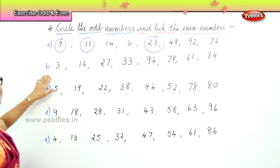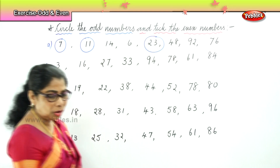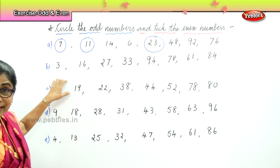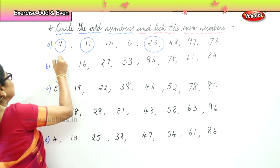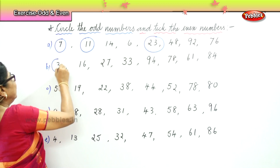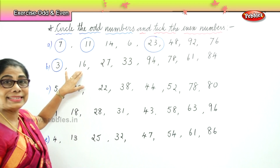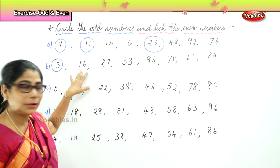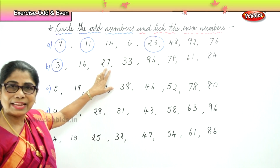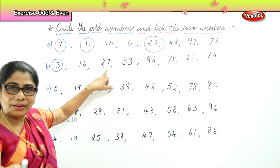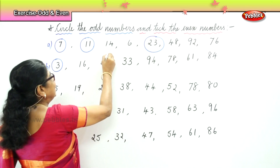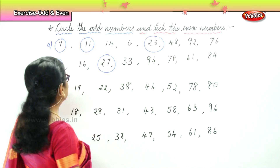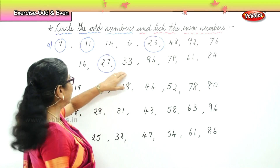Let's take the second set. Number three — is it an odd number? Yes, three is an odd number. Sixteen — is it an odd number? No. Twenty-seven ends in seven — is twenty-seven an odd number? Yes. Seven, twenty-seven — they are odd numbers.